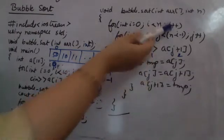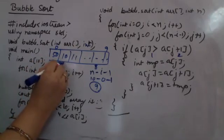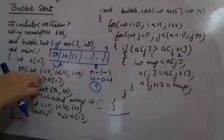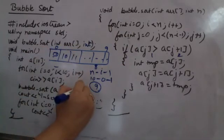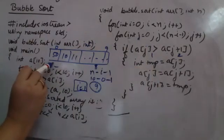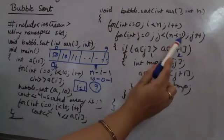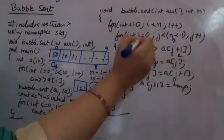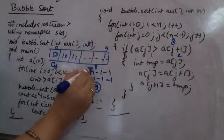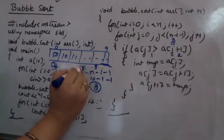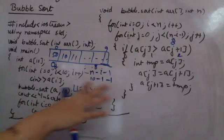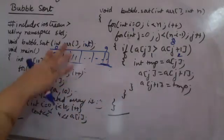After the inner loop completes, i increments to 1. Now j starts again from 0 and the condition becomes n - i - 1 = 10 - 1 - 1 = 8, so j < 8, meaning only up to index 7 and 8 are compared — the last element is already sorted. This process repeats for each value of i. That is how the bubble sort procedure is performed — any doubts, please ask.